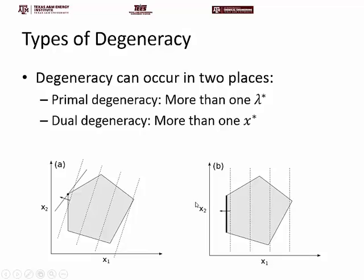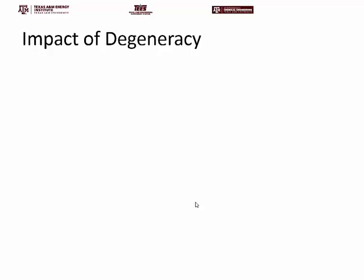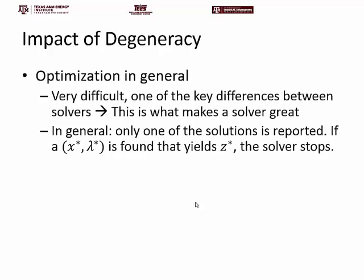These are the two types of degeneracy we are going to look at, and their effect on mathematical programming algorithms. This is really what makes the difference between a good solver and a great solver — if a solver is able to robustly handle cases of degeneracy, as well as other issues like numerical inaccuracies and scaling, that's what makes a solver great. In general, only one of the solutions will be reported: if the solver finds a valid (x*, λ*) that yields the optimal z* and knows it's optimal, it stops. In CPLEX, for instance, there are several options when it comes to pruning and stopping of the algorithm which you can also look into.